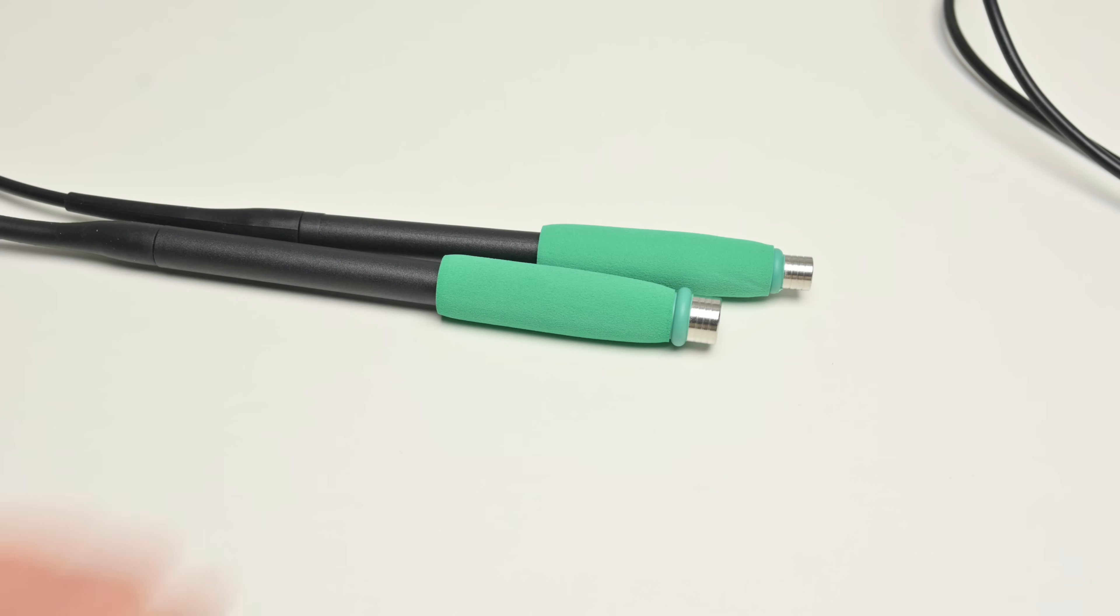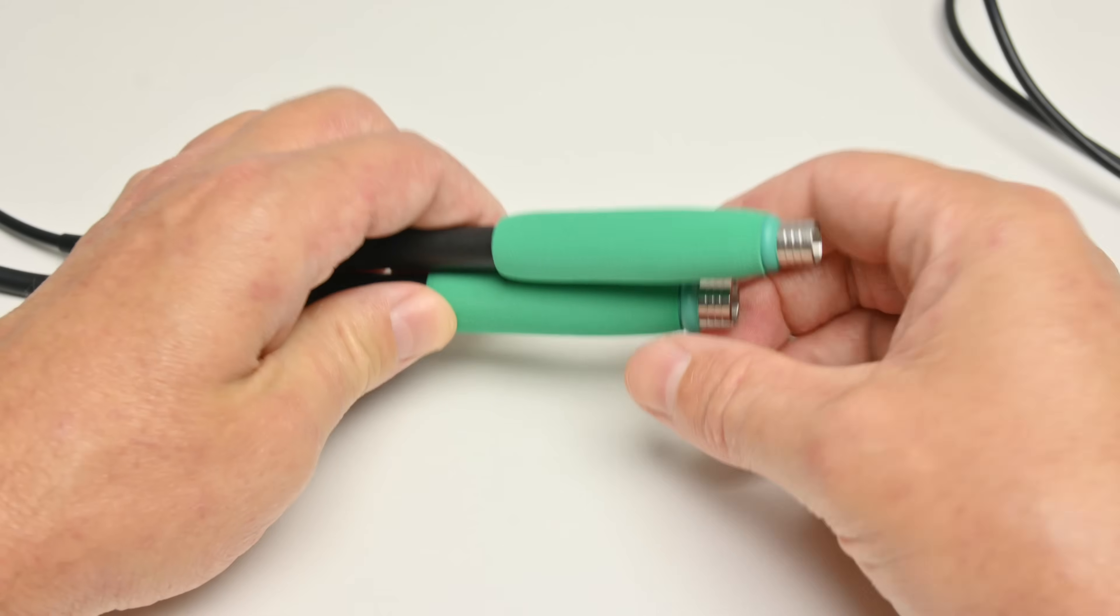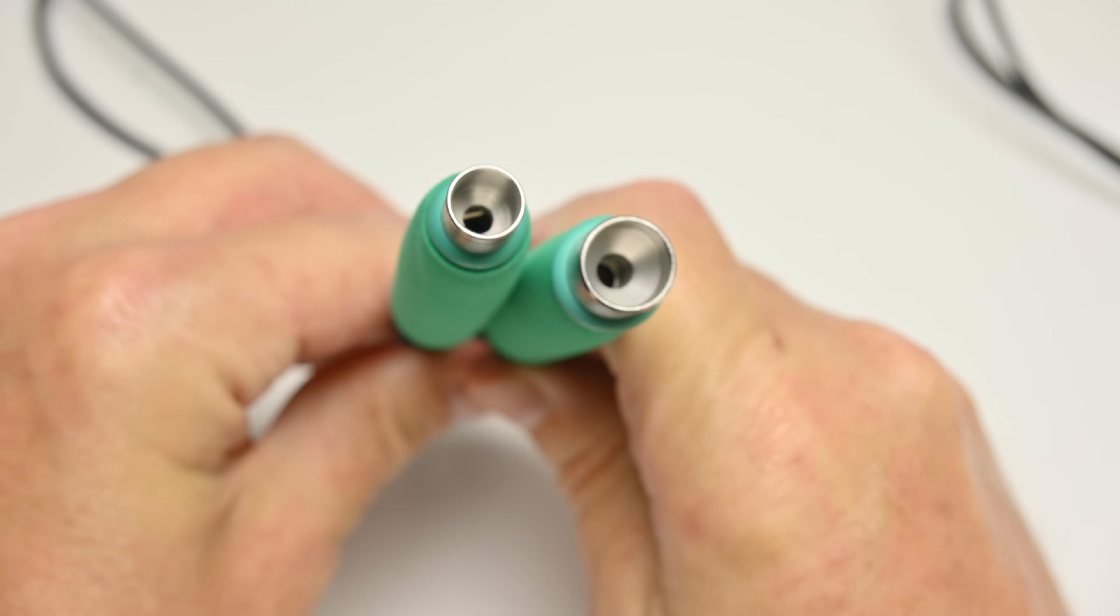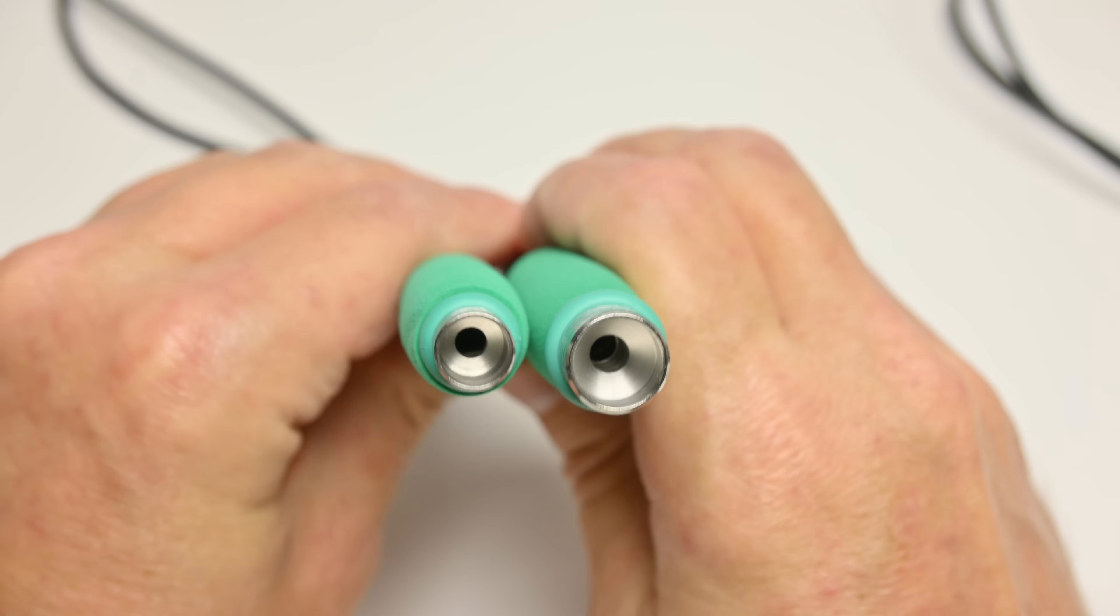My understanding is that the F210 is for more detailed, finer work and the F245 is for when you need more power.